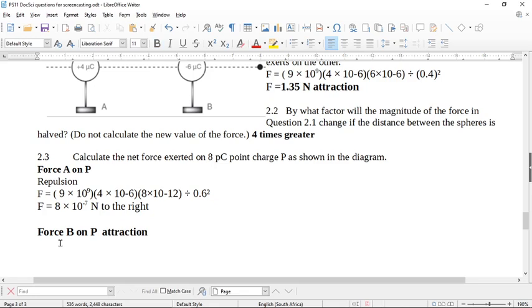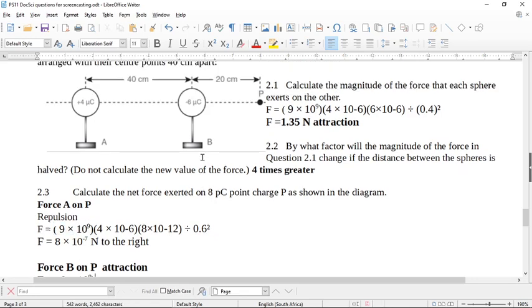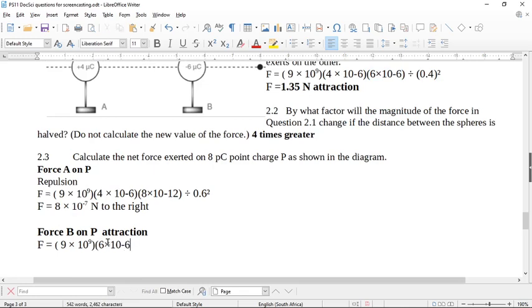Now we're going to come and write the formula again. Do you see me writing the formula? So F equals K, Q1. Q1 is 6 microcoulombs. K, Q1, Q2, remember Q2 is the P, so it's that picocoulomb value.